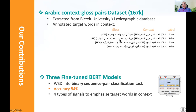We extracted this dataset and then fine-tuned three BERT models and achieved an accuracy of 84. In this way, what we did is that we converted the word sense disambiguation task into a binary sequence pair classification task.